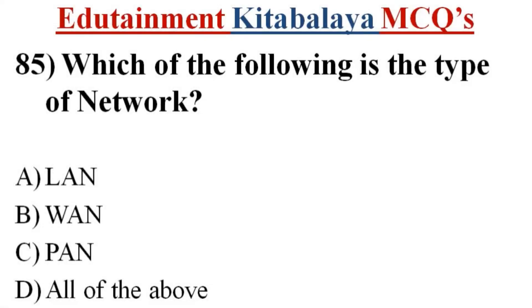Question number 85. Which of the following is the type of network? A. LAN. B. WAN. C. PAN. D. All of the above. Correct answer is D. All of the above.